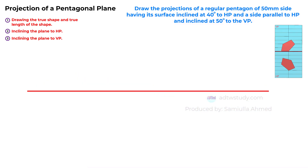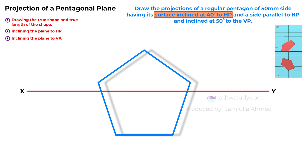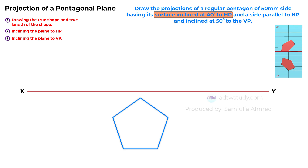This line, labeled as XY, serves as our reference line. In step 1, when drawing the true shape of the plane, the first task is to determine its placement. As indicated in the question, the surface is inclined to the horizontal plane, indicating that the true shape of the pentagon will reside on the HP, below the XY reference line.